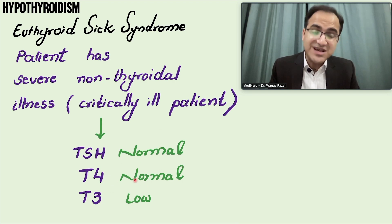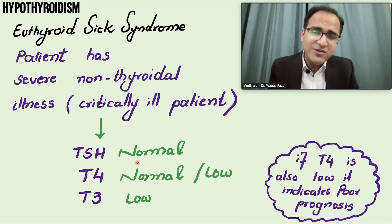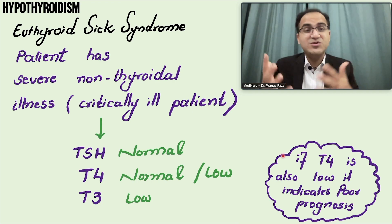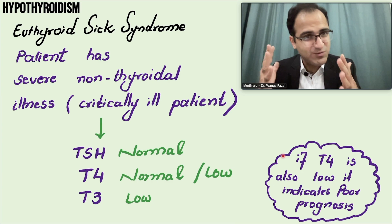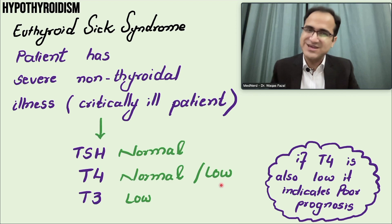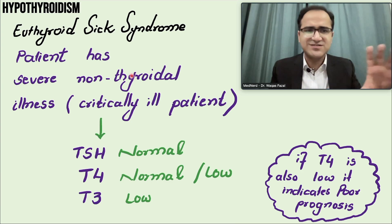The thyroid function tests are abnormal but the patient is not having any hypothyroidism. In some cases, the patient can also have a low T4 in addition to low T3. If T4 is low and T3 is also low but TSH is normal in euthyroid sick syndrome, this indicates a poor prognosis — meaning whatever illness the patient is suffering from, such as sepsis, pneumonia, or UTI, is very severe. However, as soon as the patient recovers from the illness, their thyroid function tests return to completely normal.